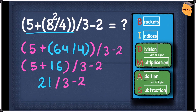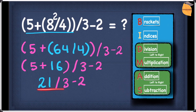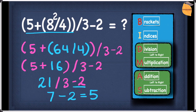In terms of BIDMAS, we have division and subtraction. Since division is higher, we do division first — 21 divided by 3 gives 7. Then 7 minus 2 gives an answer of 5. So the answer for this question is 5.